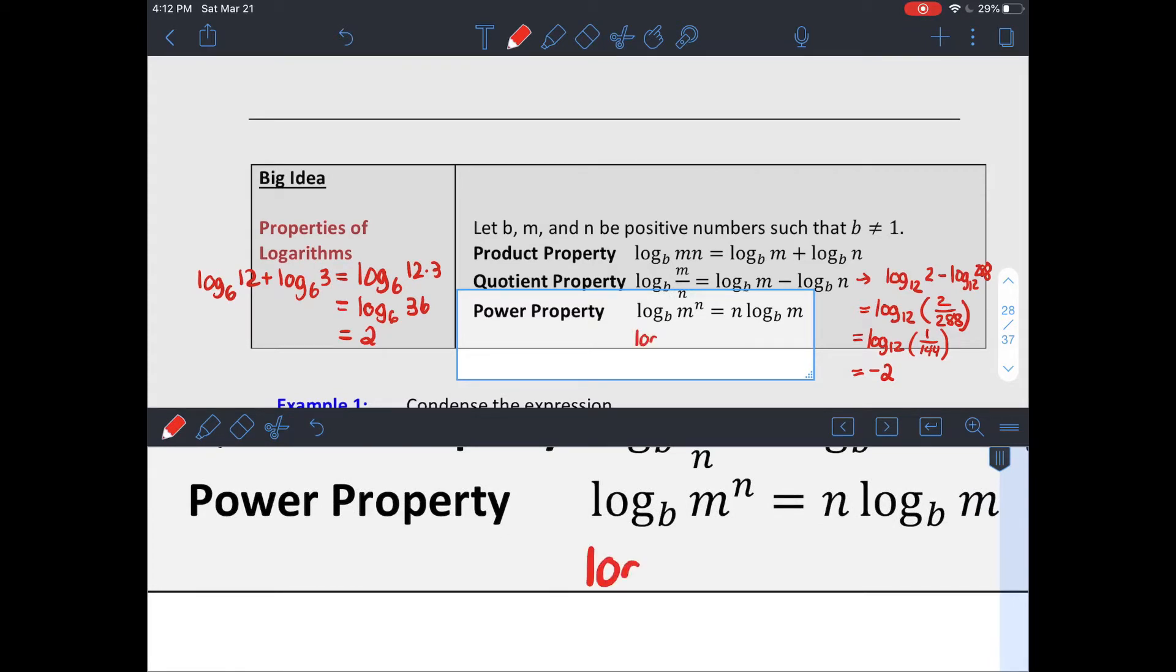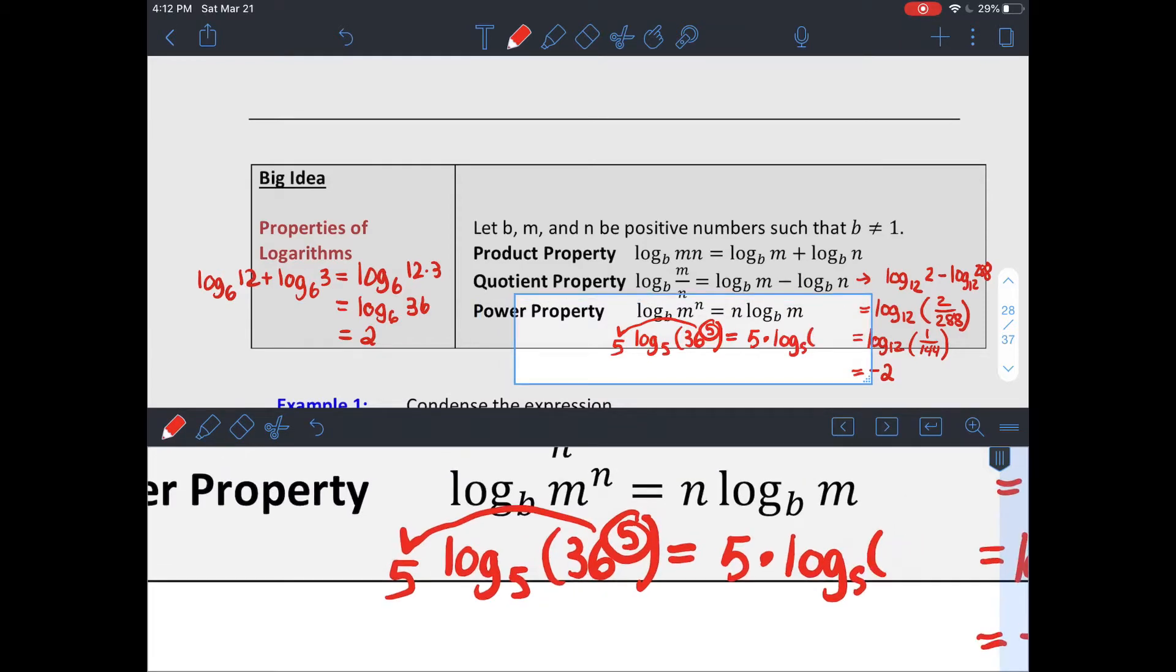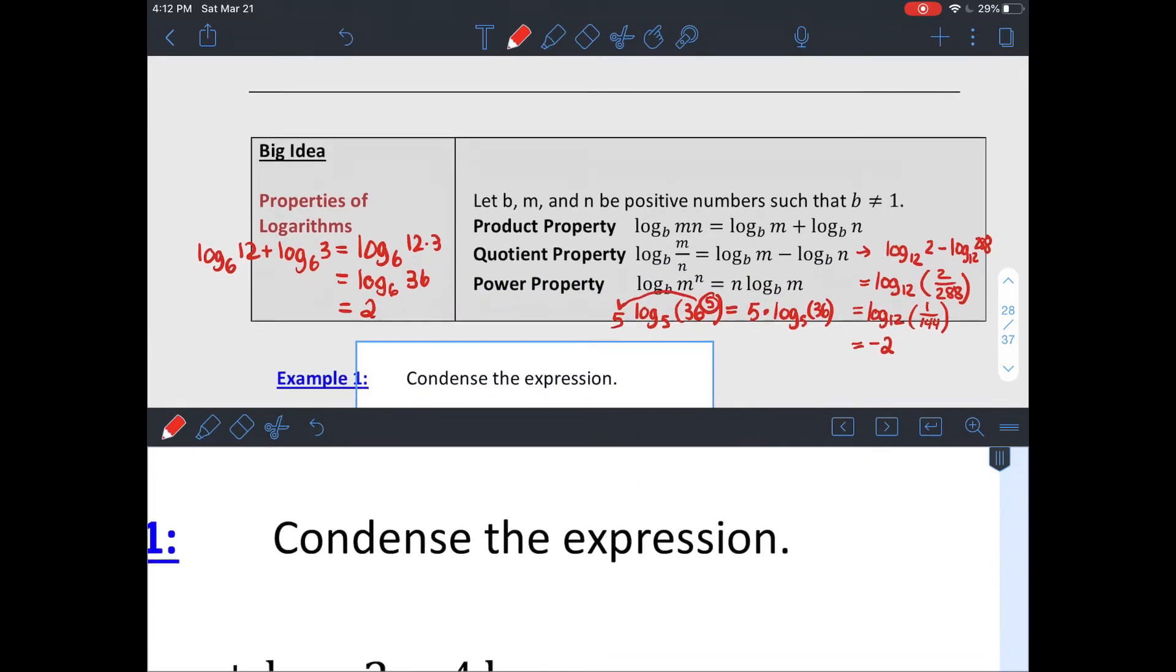And there's one more that involves exponents inside of logarithms. Say I have log base 5 of 36 to the 5th. Nobody really wants to deal with a number that big. That is equal to the same thing as bringing that exponent out and multiplying it by the log without the exponent inside. So it says those two things are equivalent.